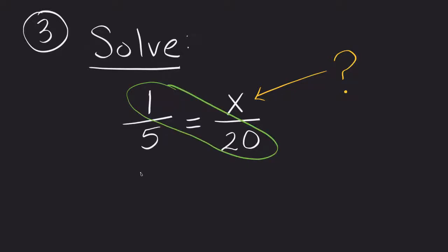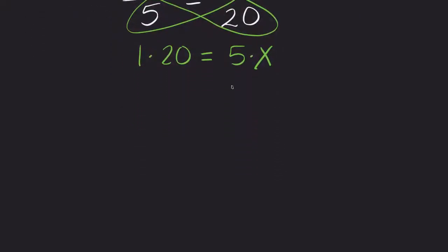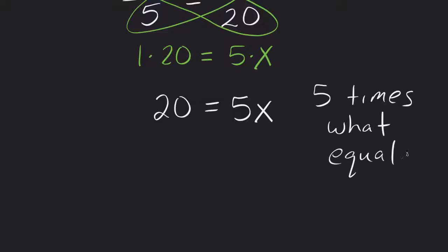But what we're going to do instead is we're going to go ahead and do our extremes. So 1 times 20. And we're going to do our means. So 5 times x. And we're now going to try and solve this a little bit. So we're going to get an answer that says 20 is equal to 5x. Or 5 times what equals 20? That's really what this question is asking. 5 times what?